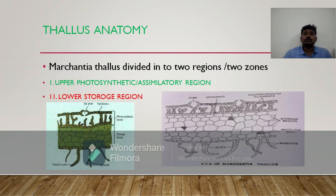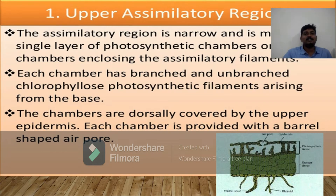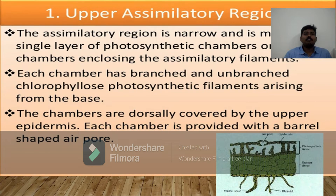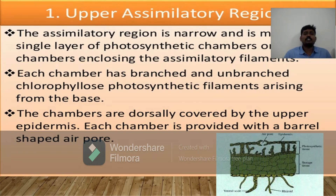The upper zone is the photosynthetic zone, also called the assimilatory region. The second one is the lower storage region. These are the two main regions found in thallus anatomy. The upper assimilatory region is very important because its main function is photosynthesis. Photosynthetic chambers are also present in this region; each chamber has branched and unbranched photosynthetic filaments arising from the base.